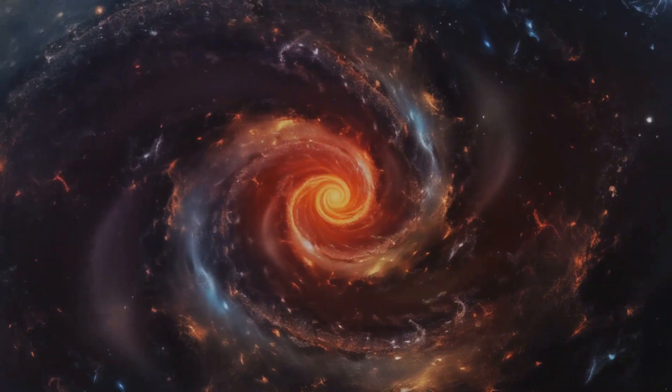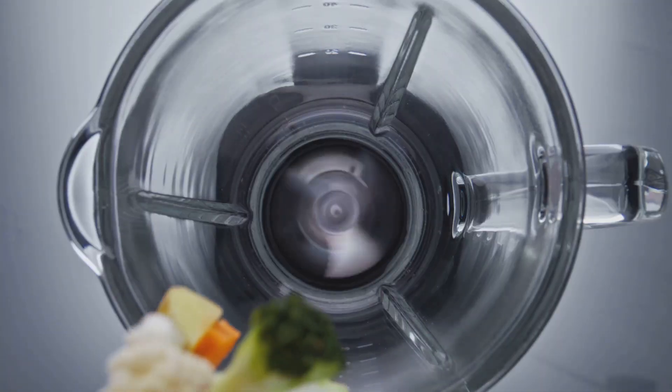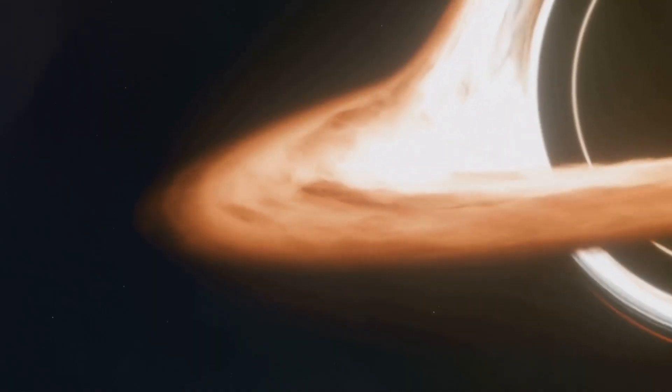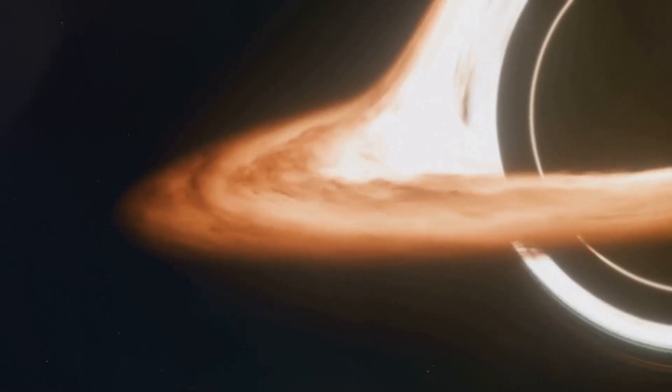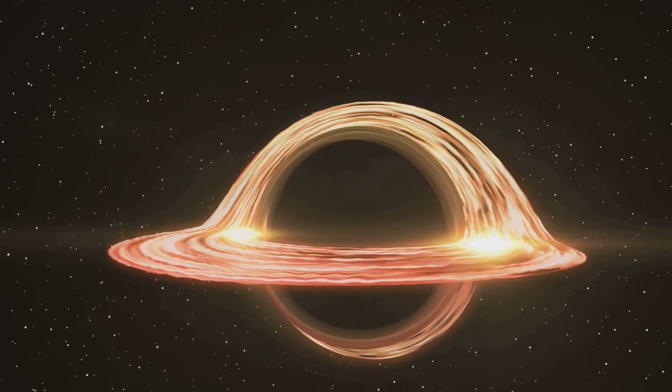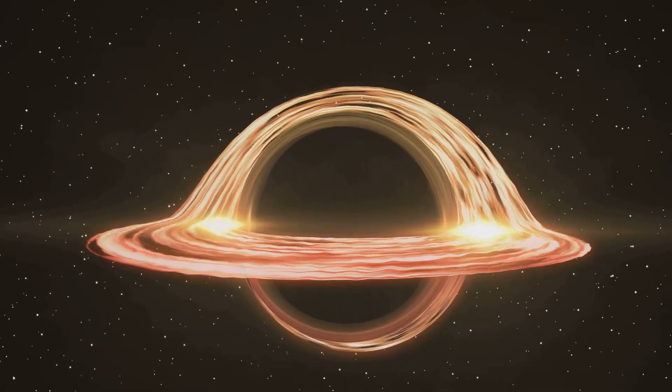Rapid rotation. Some neutron stars spin hundreds of times per second, faster than the blades of a blender. Gravitational titans. The gravity on a neutron star is so strong that it can bend light, a phenomenon known as gravitational lensing.